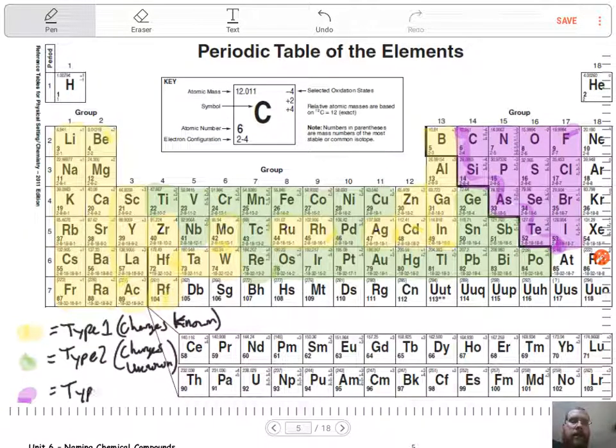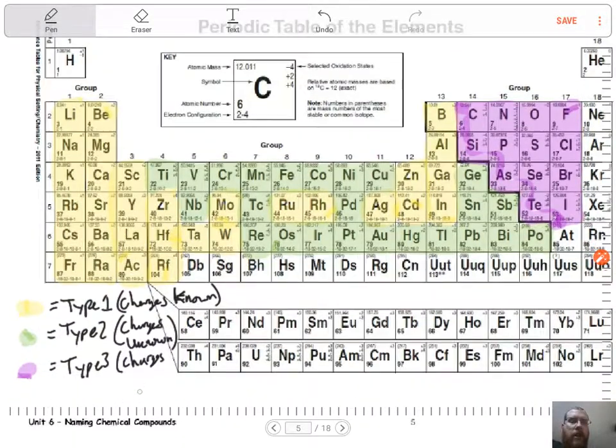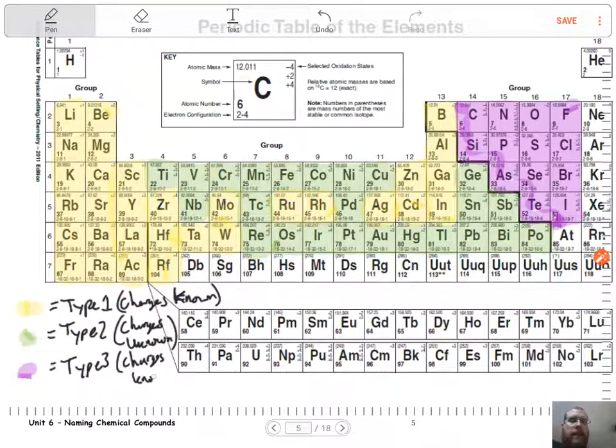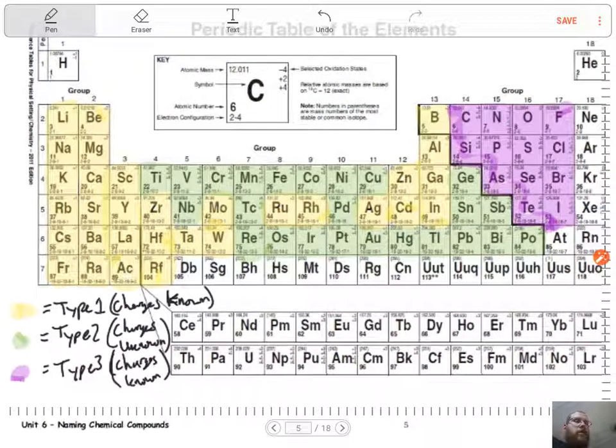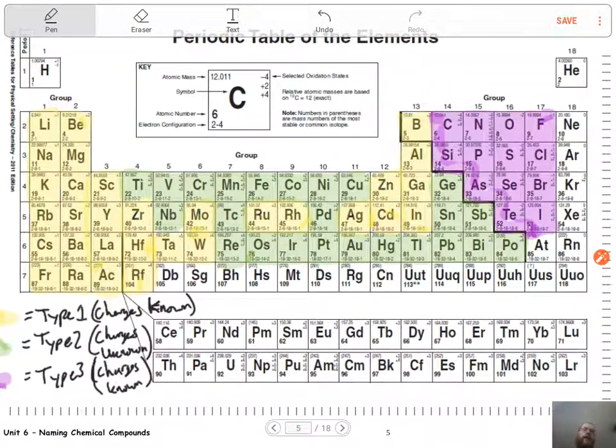So these last ones, guys, these are the type 3s. We do know their charges, but these charges aren't going to be as important to us right now. It's just more for naming purposes. The ones that are in purple there are going to have a specific rule that they will follow.